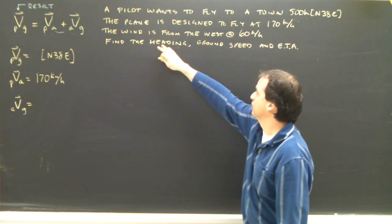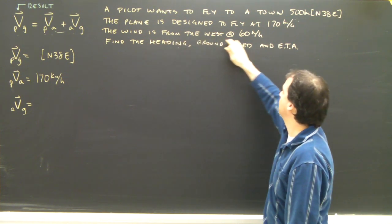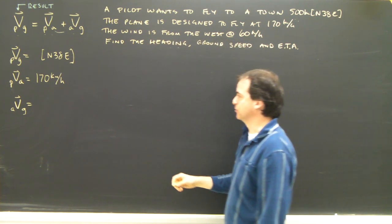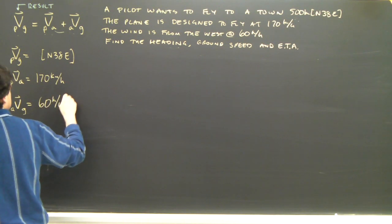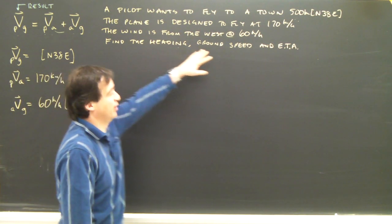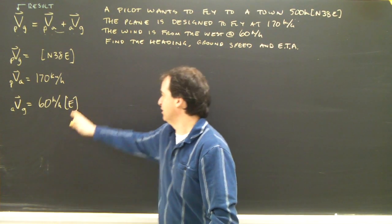170 kilometers per hour. The wind is from the west at 60 kilometers per hour. Because it says from the west, it means it's traveling east.